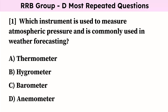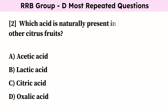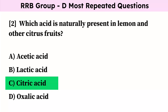Which instrument is used to measure atmospheric pressure and is commonly used in weather forecasting? Correct answer is barometer. Which acid is naturally present in lemon and other citrus fruits? Correct answer is citric acid.